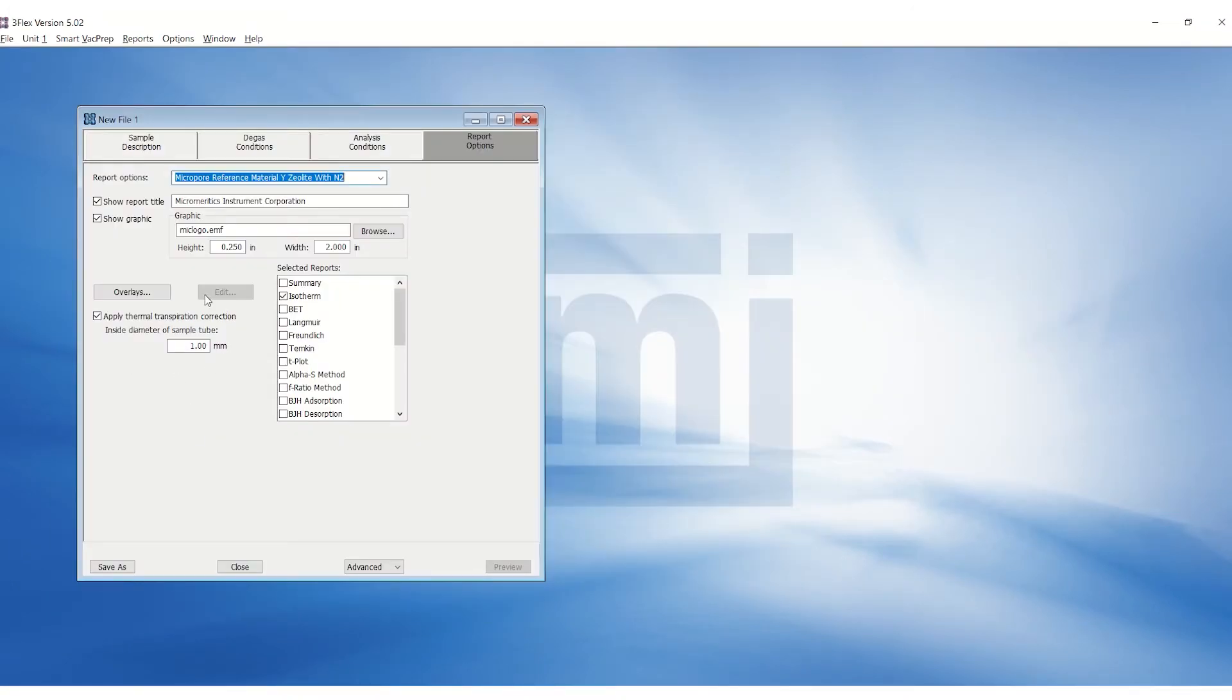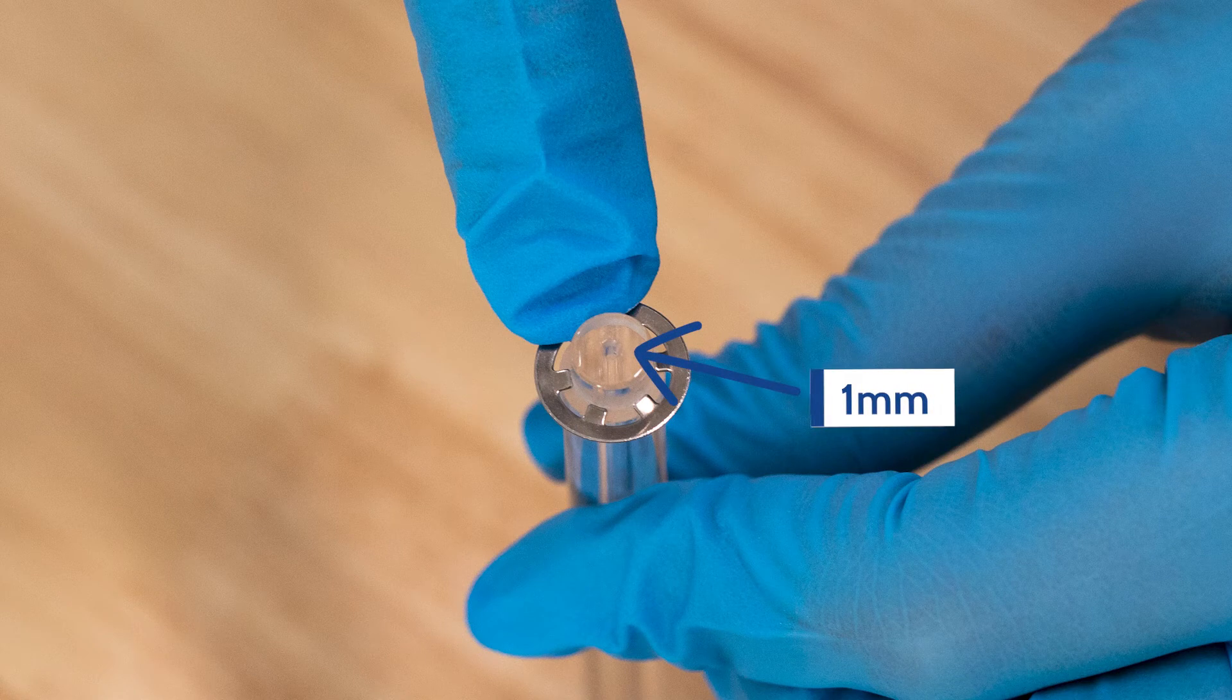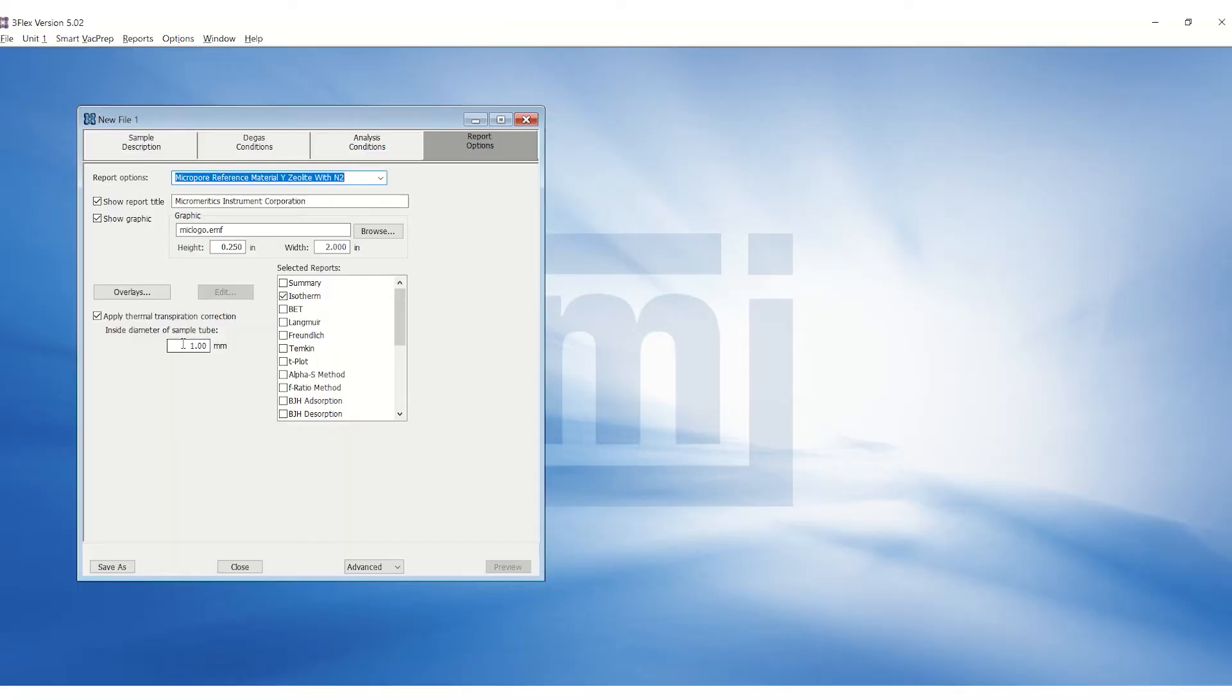Under Report Options, notice Apply Thermal Transpiration Correction inside the diameter of sample tube is checked and 1 mm is entered. 1 mm indicates the diameter of the precision hole in the hanging filler rod. When using a check seal without the filler rod, ensure to change the diameter to the sample tube diameter, which is 9 mm.